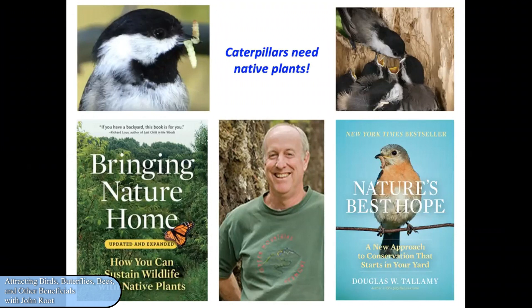One observation Doug Tallamy makes is that currently our landscaping favors non-native plants — about 70% of the plants in our landscapes are non-native, and it should be reversed to at least 70% native plants, and ideally more. His book, Nature's Best Hope, explains that we can't depend on publicly owned land to offer enough habitat to turn around the alarming declines of wildlife. We really need to think about privately owned land as offering more of the habitat that wildlife requires. He actually calls it the 'homegrown national park' — collectively, all of our private property can be thought of as nature sanctuaries.